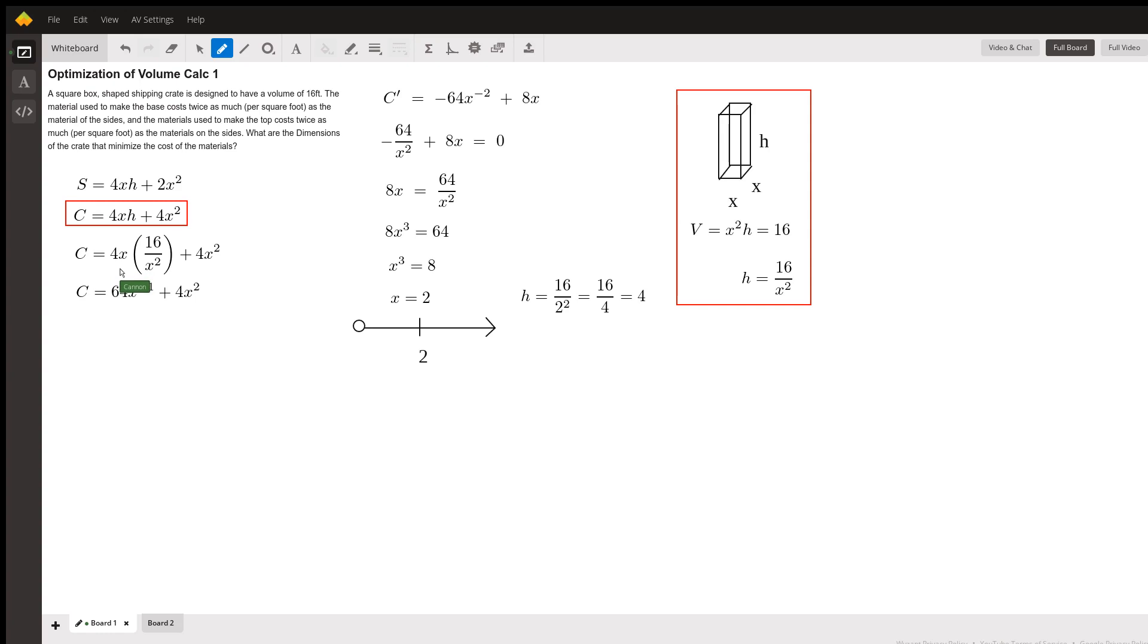If we simplify that a little bit, 4x times 16 over x squared would be 64 over x. I like using negative exponents because it makes it easier to do our power rule. Now we've got a cost function. In order to minimize that cost function, we need critical points, and critical points means we need to know when the derivative is equal to zero. Critical points also include anything that would make the function undefined, but we can disregard that because it wouldn't make any sense to have a box with sides zero feet long.